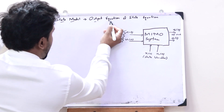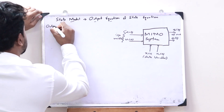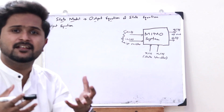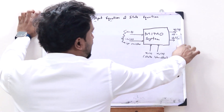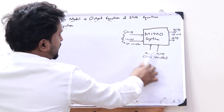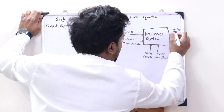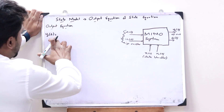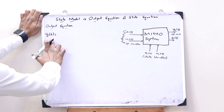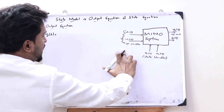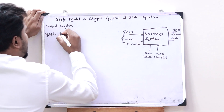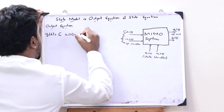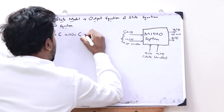Let us see what is referred to as the output equation. The output equation is an equation used for understanding the relationship between the output variables and the input variables and state variables. For the first output variable Y1(t): Y1(t) is equal to some coefficient C into the first state variable X1(t), plus another coefficient C into the second state variable X2(t).